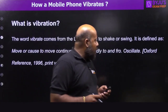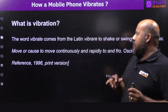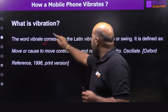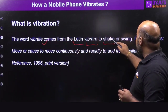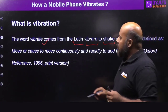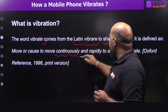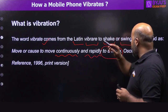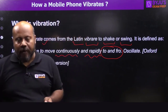What is vibration? The word vibrate comes from the Latin word 'vibrer' which means to shake or to swing. It is defined as: move or cause to move continuously and rapidly to and fro. This is the standard definition of vibration.